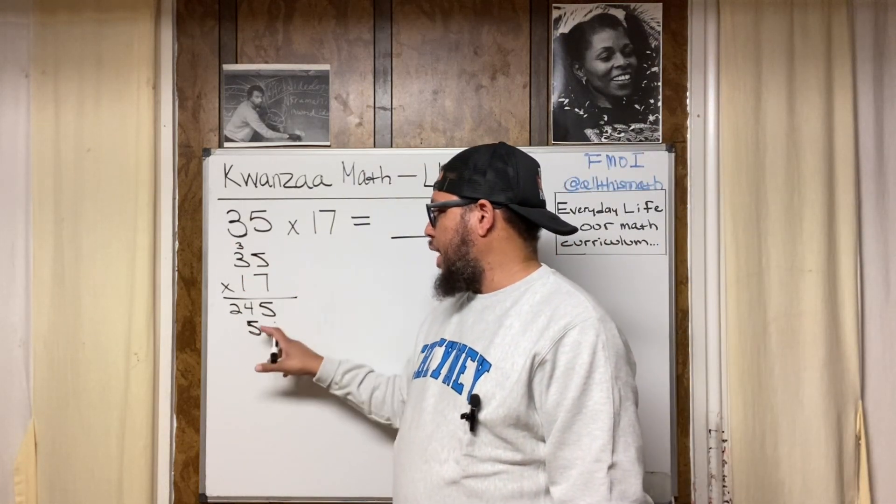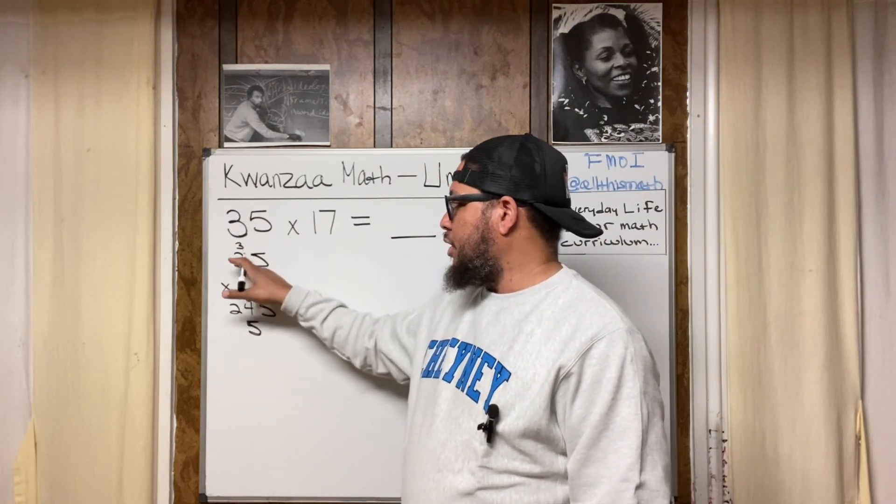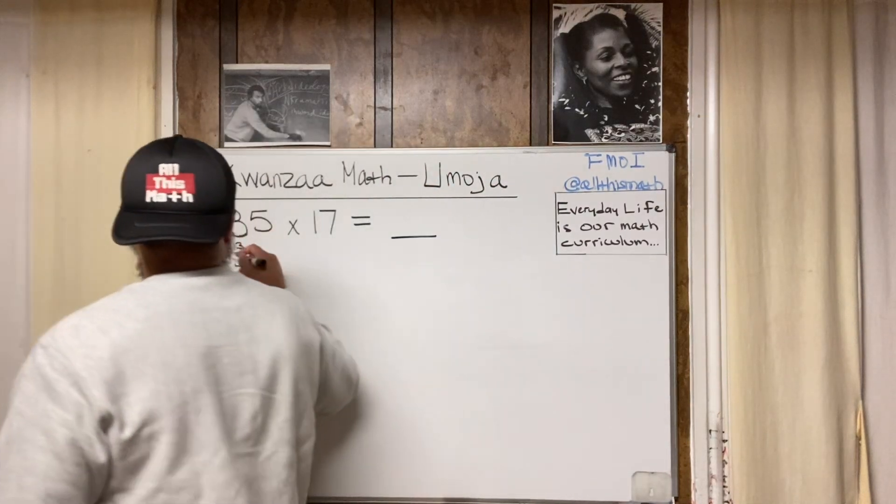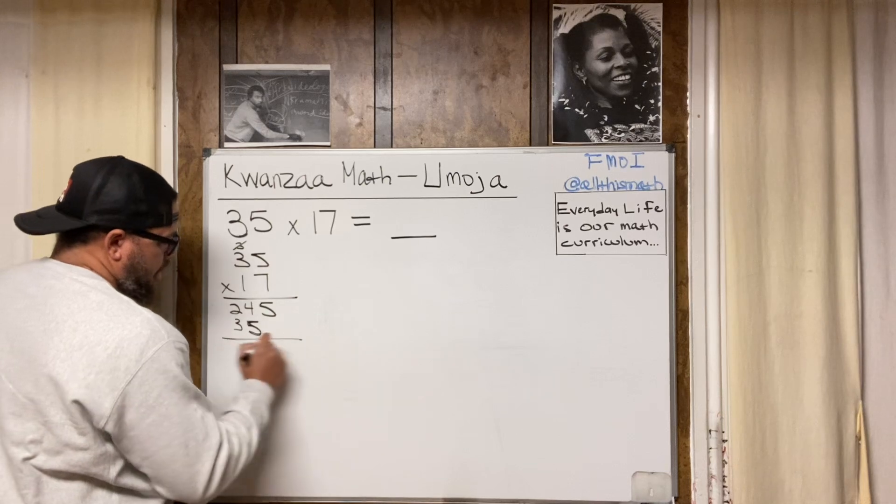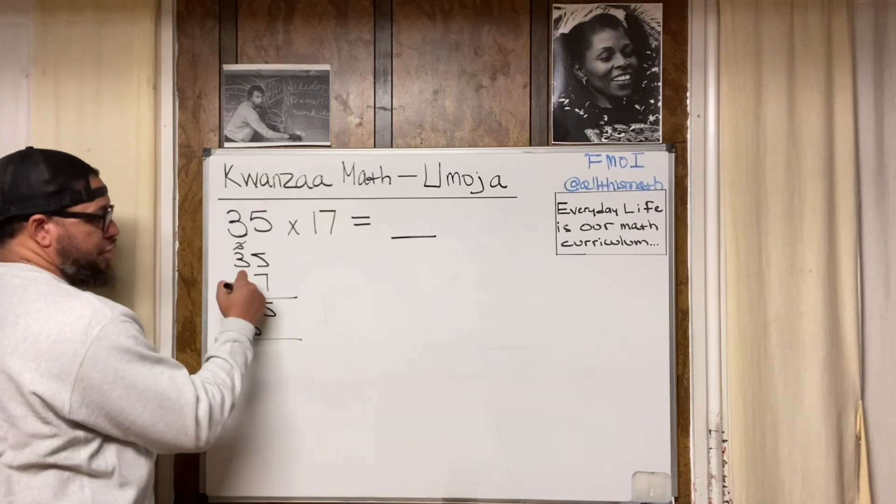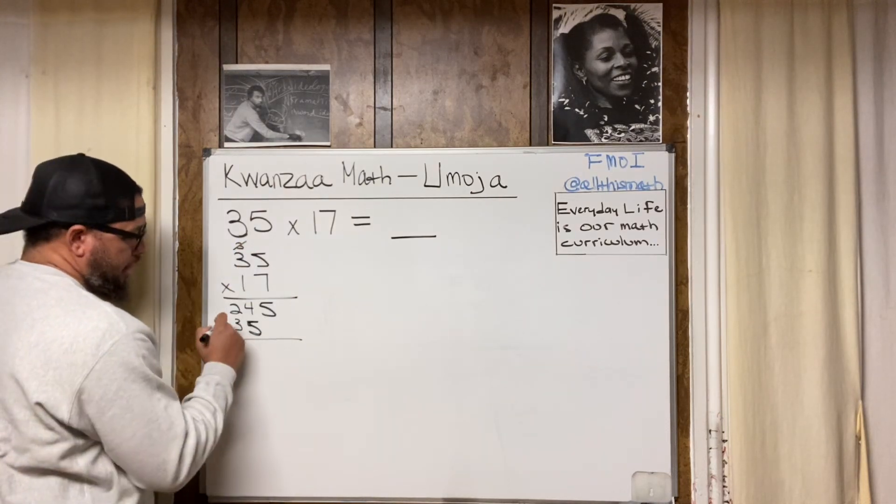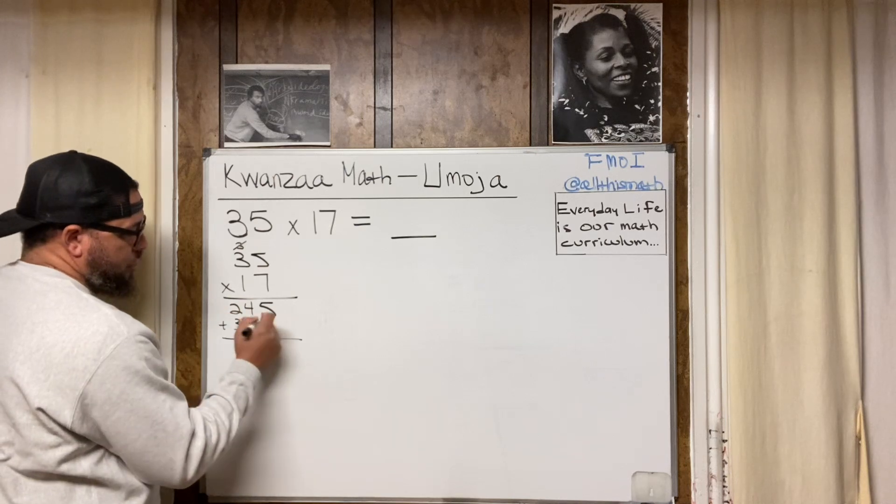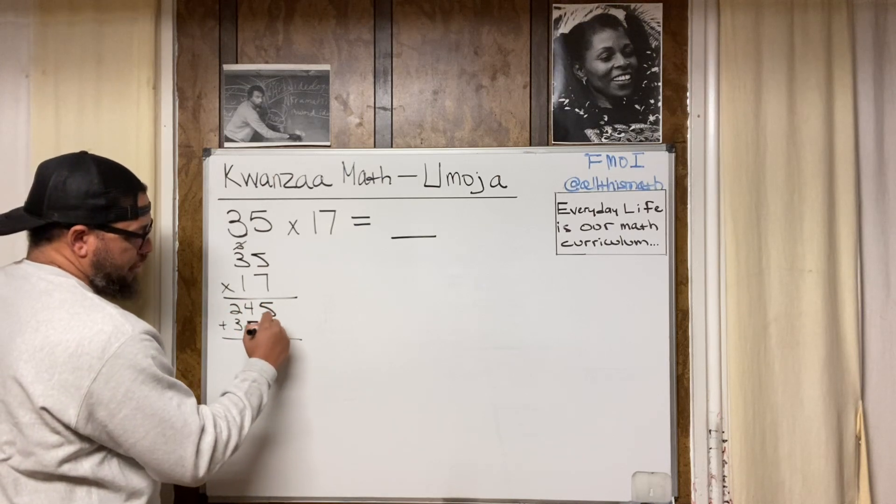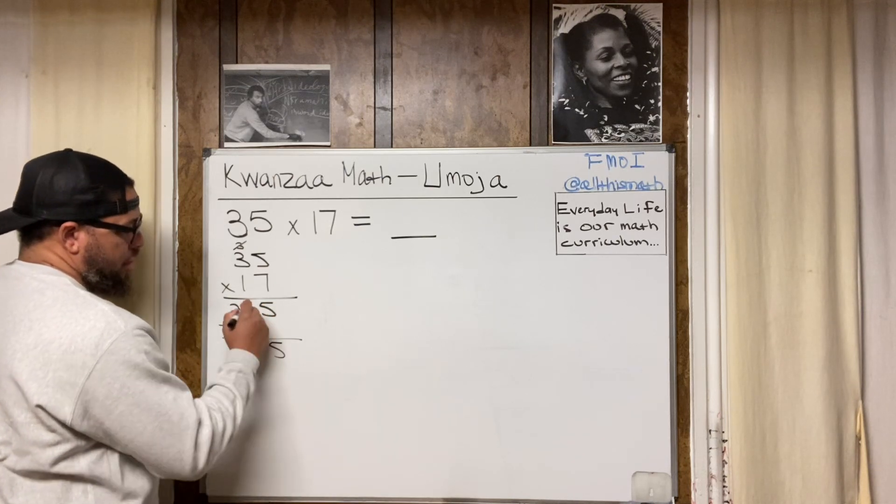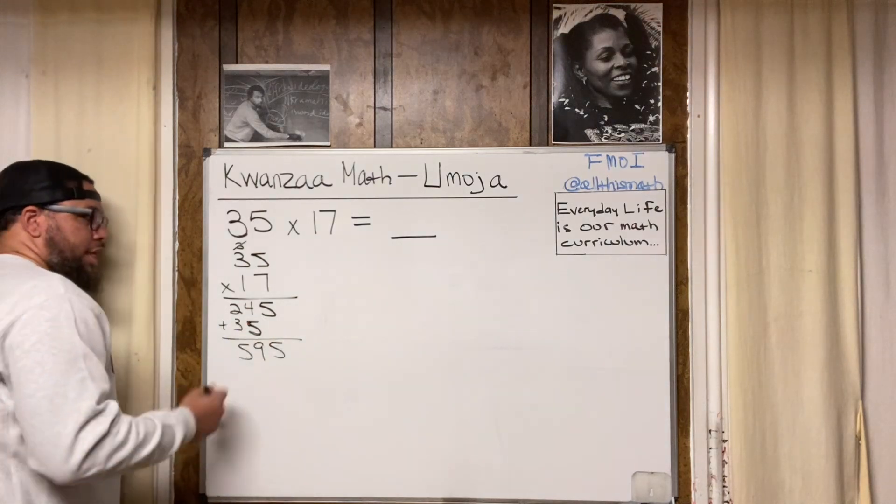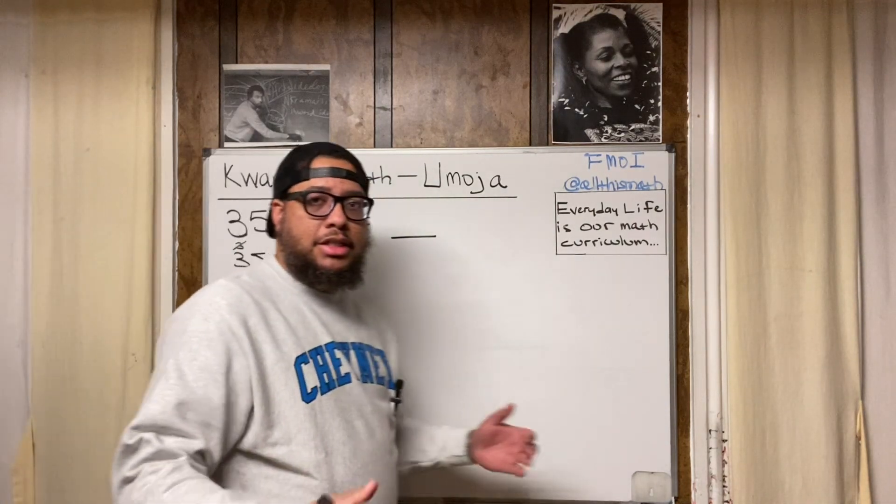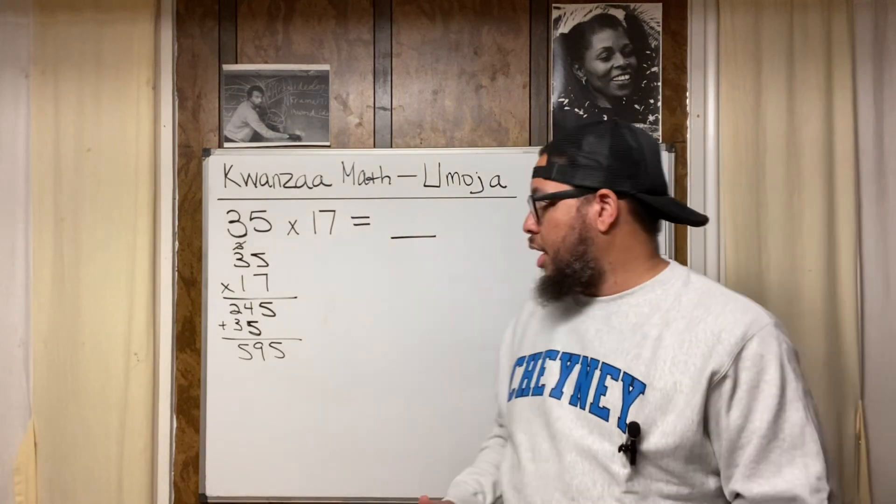So now we did 1 times 5. We got 5 indented. Then we're going to do 1 times 3. We get 3. Now, this 3, we already used. So I really could cross that out. We're going to put the 3 in the hundreds place. We draw another horizontal line because I'm finished with the 1. I multiply 1 by everything. Then I put a plus on and then I'm adding these two numbers together. So 5 plus nothing is just 5. 4 plus 5 is 9. 2 plus 3 is 5. That's the final answer, 595. That's the standard algorithm. So that's method number 1.